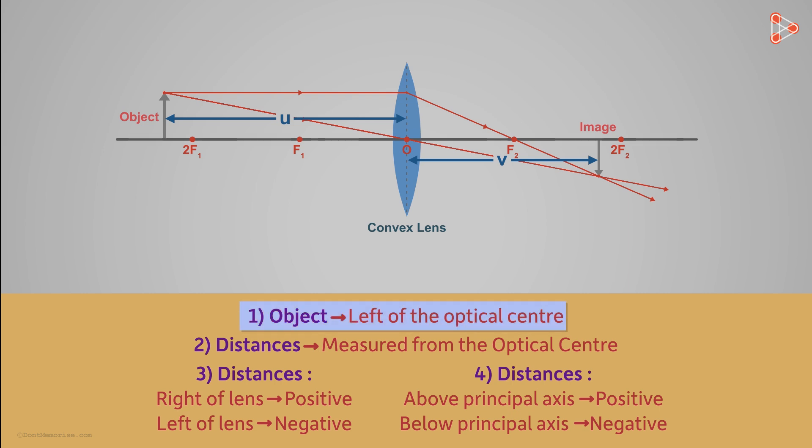But according to the first sign convention, the object is always kept to the left of the optical centre. This means that the object's distance from the lens will always be negative. But the image distance could be positive or negative depending on its position.